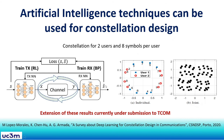We can also use artificial intelligence techniques for constellation design in non-coherent schemes. The problem is that the non-coherent scheme results in an intractable optimization problem, so the best approach is to rely on AI techniques to design constellations. We published a paper titled 'A Survey on Deep Learning for Constellation Design in Communications' at CSNDSP Porto 2020, and we are currently working on an extension of these results, which is under submission to IEEE Transactions on Communications.